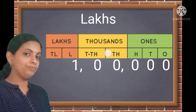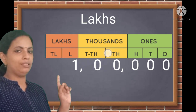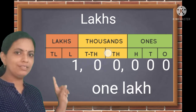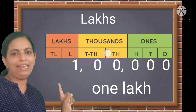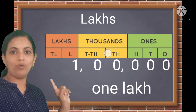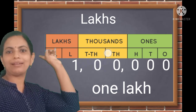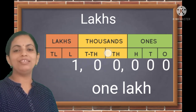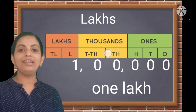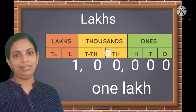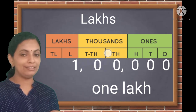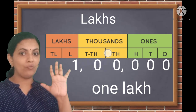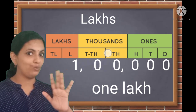So in this number there are two commas. We will read the number: one is under lakhs, so this number is one lakh. In one lakh, there are five zeros.